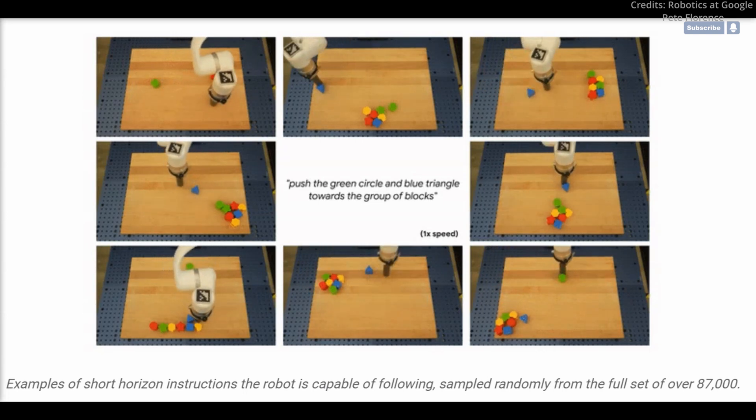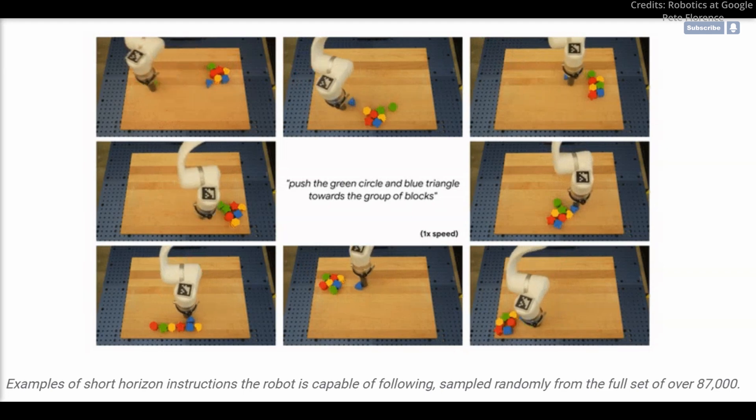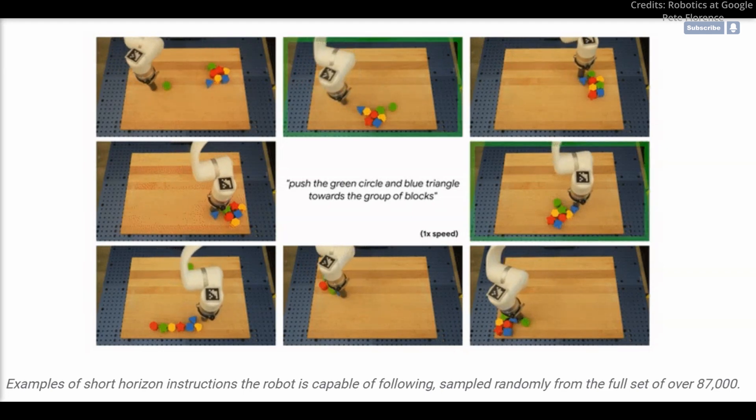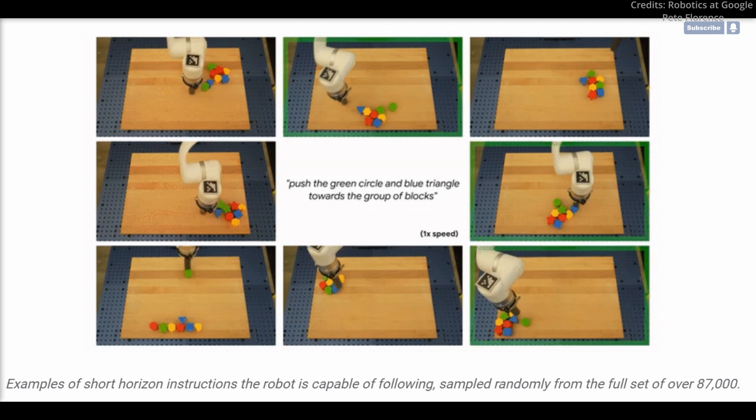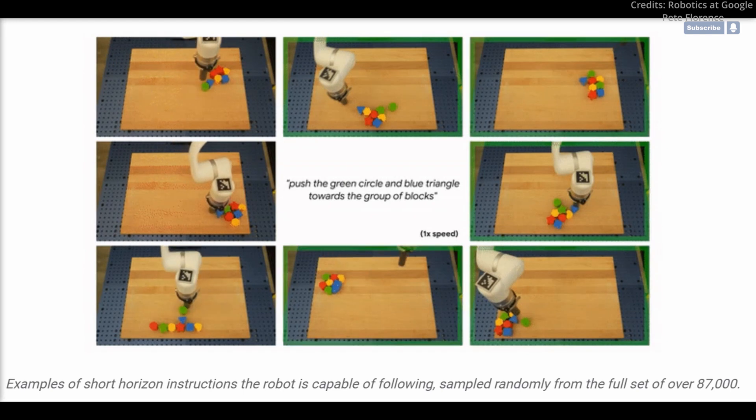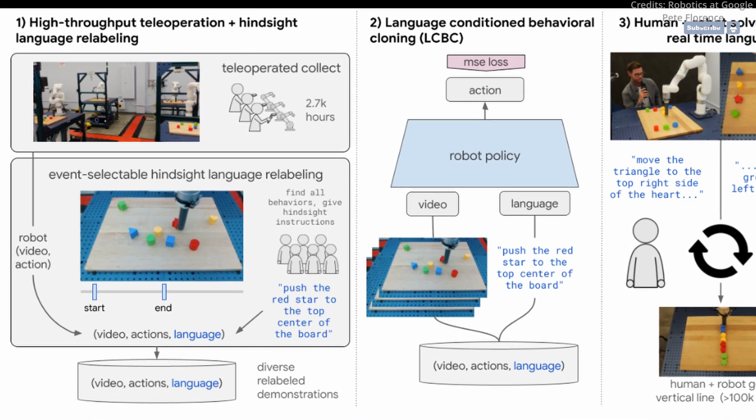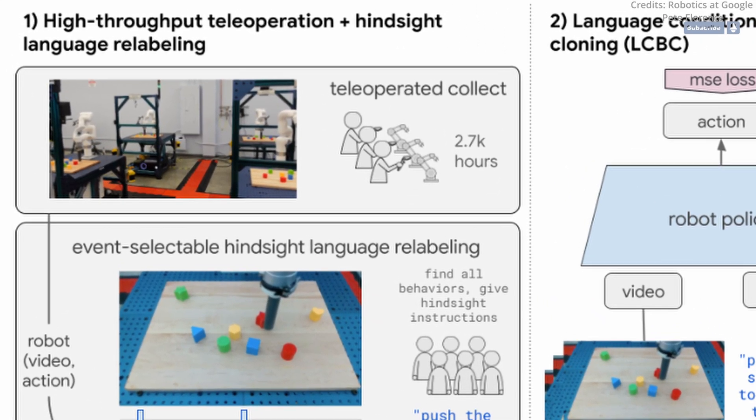This learning approach and architecture are designed to be simple and straightforward. The robot policy is a cross-attention transformer that maps 5Hz video and text to 5Hz robot actions, using a standard supervised learning behavioral cloning objective without any additional losses.